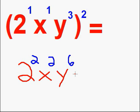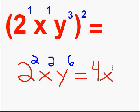We can rewrite this coefficient — 2 squared — as a 4, since 2 times 2 is 4, and all the rest will stay the same: x squared, y to the 6th.